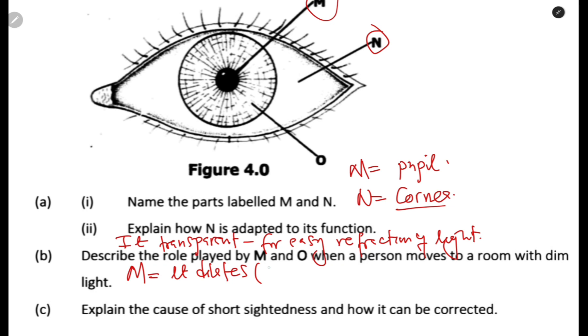What is dilates? Becomes wider. So, it dilates, which means it becomes wider to allow more light to enter the eye for image formation. So, it dilates, it becomes wider to allow more light to enter for clear image formation. So, that is its role.